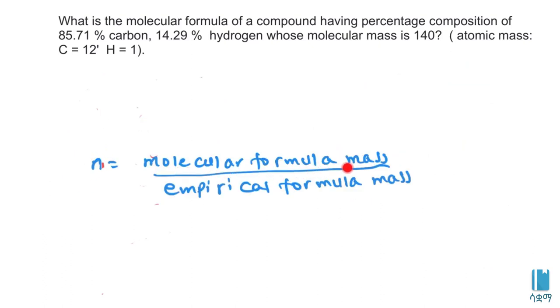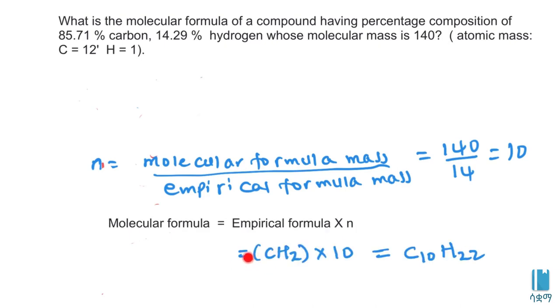The next step is to calculate n. N equals molecular mass divided by empirical formula mass, which is 140 divided by 14, equals 10. The molecular formula equals empirical formula times n, which is CH2 times 10, equals C10H20.